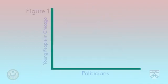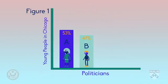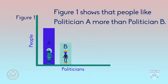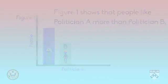At the moment, our claim is too strong, meaning that it is not totally true. Let's use figure one as an example and give you a little more data. As you can see, the people are young people from the city of Chicago. More of them prefer politician A to politician B, but the difference is quite small — 53% to 47%. The claim we made earlier was: 'Figure one shows that people like politician A more than politician B.' We need to moderate this claim because it is too strong.